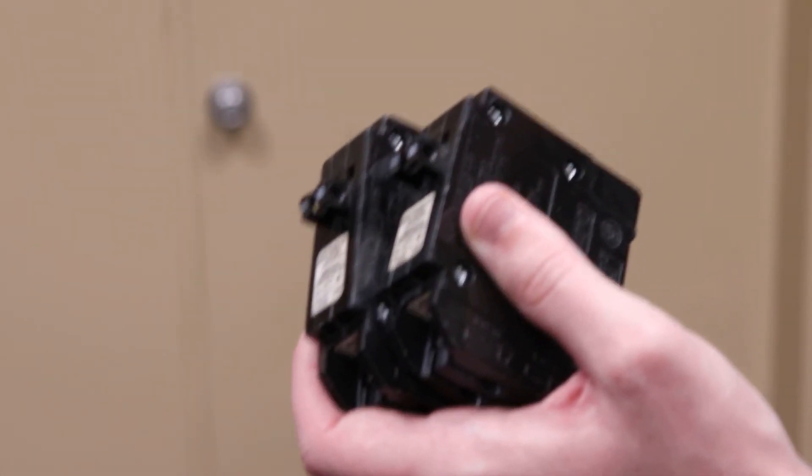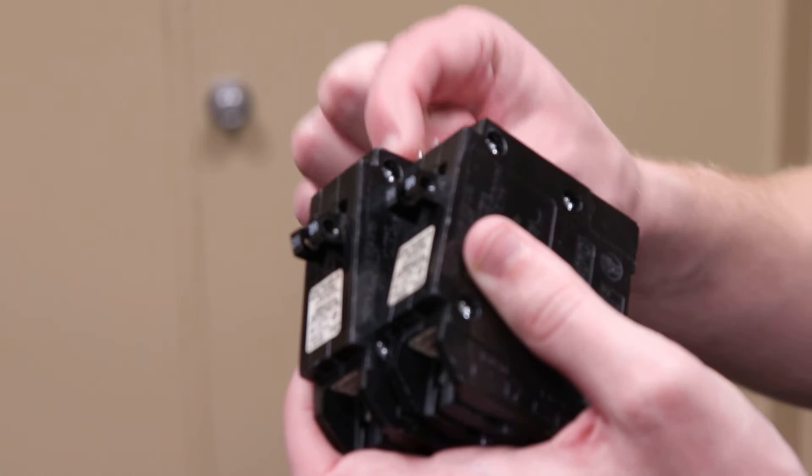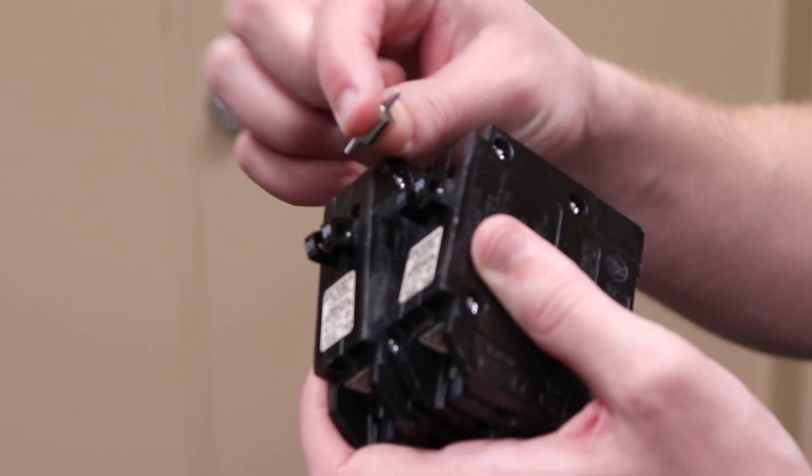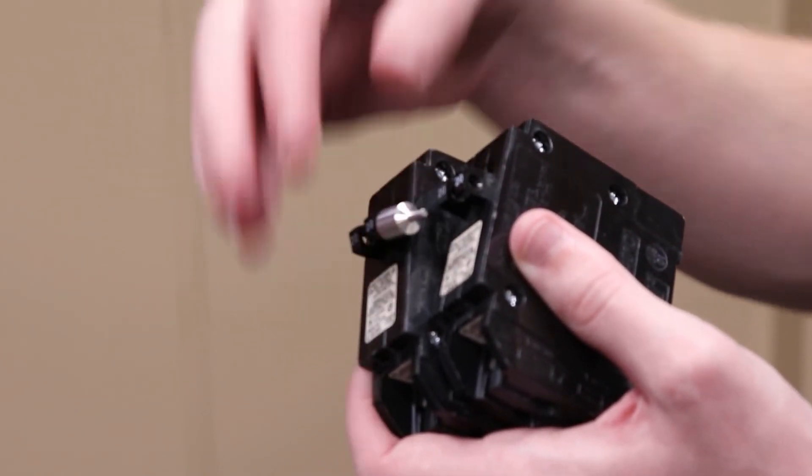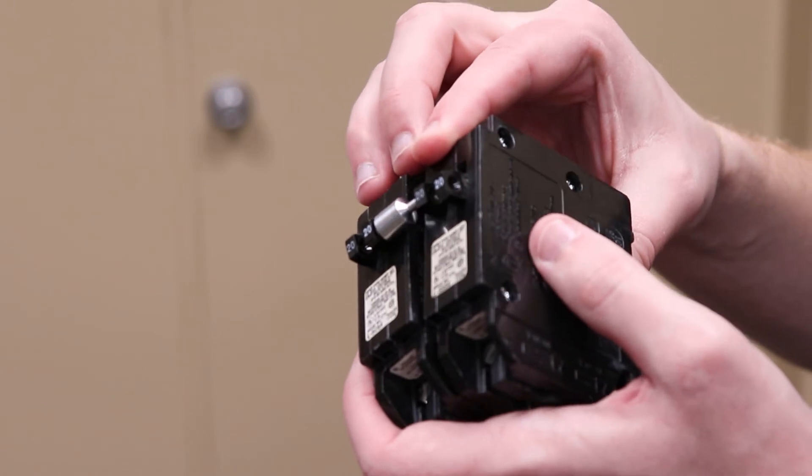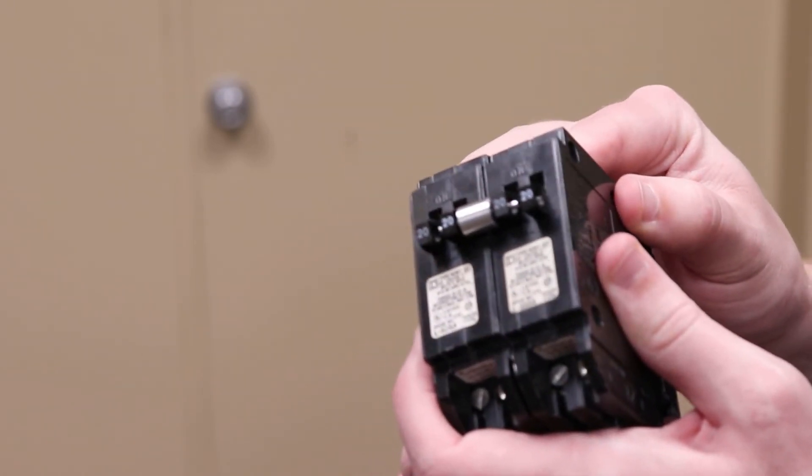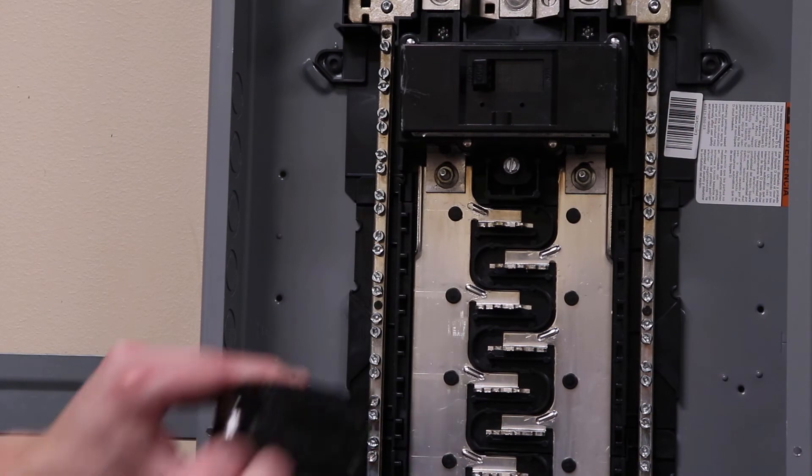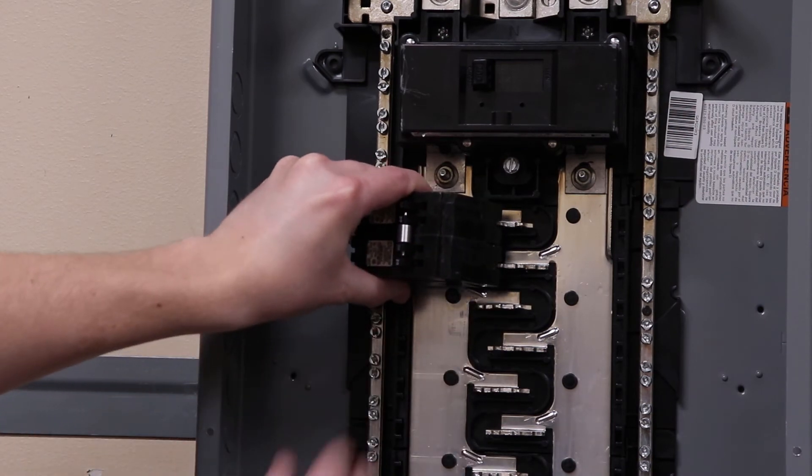Before installing the breakers in the panel, slide the ends of the handle tie into the handle holes of the inner handles and slide the Tandem Breakers together. Now install the breakers together into the load center.